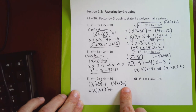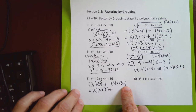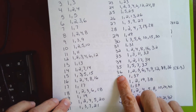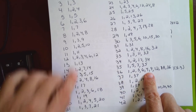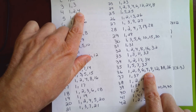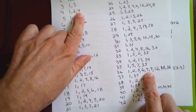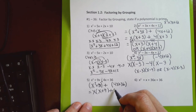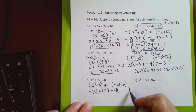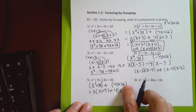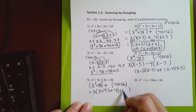In the second parenthesis both terms don't have an x. The biggest number that divides evenly into 4 and 36 is 4. So I put a 4 in front of the second parenthesis, divide 4 by 4 to get 1, leave the x, keep the plus sign, and 36 ÷ 4 = 9.